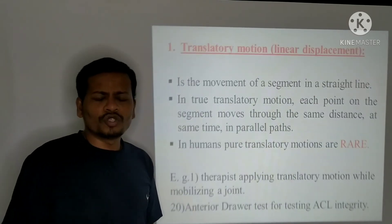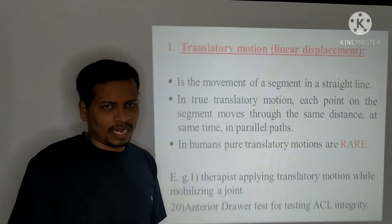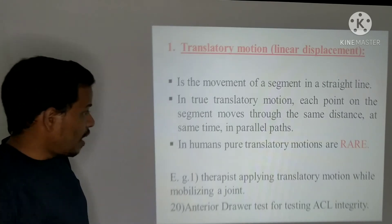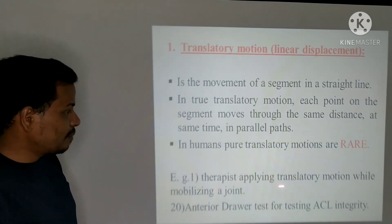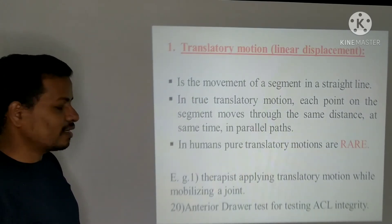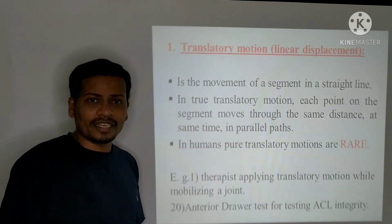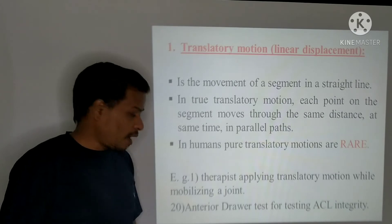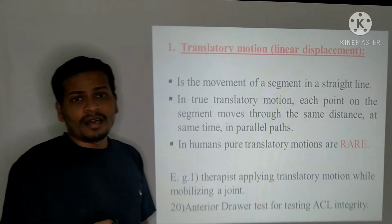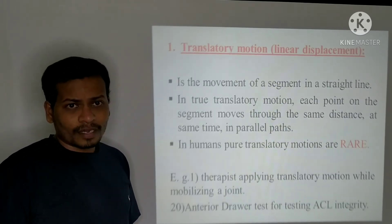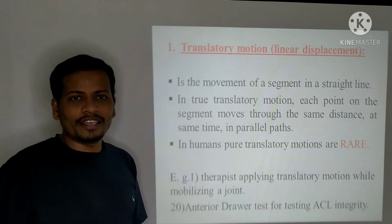In humans, true translatory motion is very rare to occur. Examples are therapists applying translatory motion while applying a mobilization technique to a stiff joint, and another example is an anterior drawer test for testing ACL integrity.